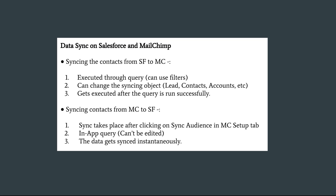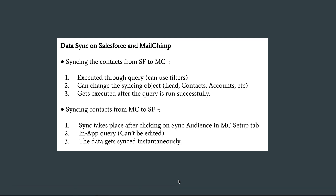Regarding the structured data sync between Salesforce and MailChimp — when syncing contacts from Salesforce to MailChimp, it is executed through a query using filters, as seen in previous videos. The query must be executed manually each time. However, when syncing contacts from MailChimp to Salesforce, it's just a click of a button using an in-app query that cannot be edited. The data does get synchronized instantaneously.